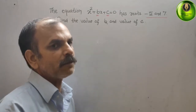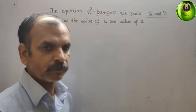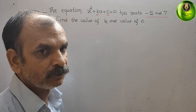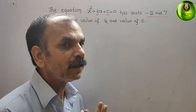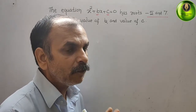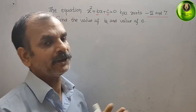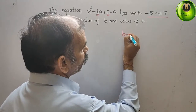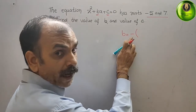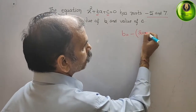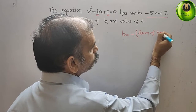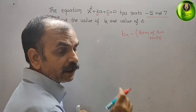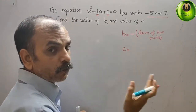It can be solved in two methods. First we will go for the shortcut method, then we will go for a long method. You can see b is with x. In middle term splitting, at b we are adding or subtracting. That means b is nothing but the negative of the sum of the two roots. And c is nothing but the product of two roots.